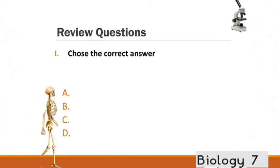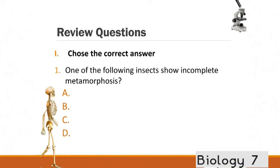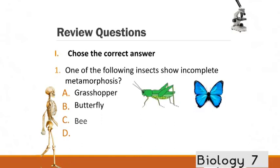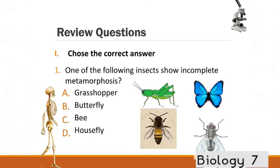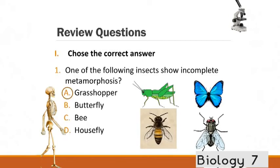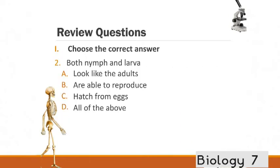Alright, time for a few quick review questions. Choose the correct answer. One of the following insects show incomplete metamorphosis. Is it A. The grasshopper. B. Butterfly. C. Bee. Or D. Housefly. And the correct answer is A. Grasshopper.